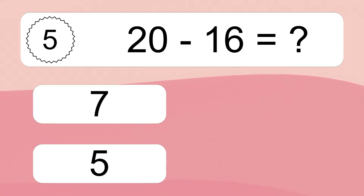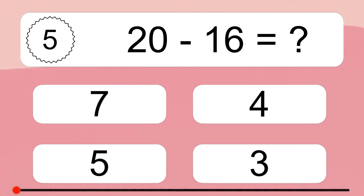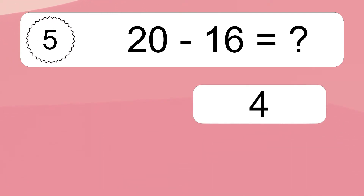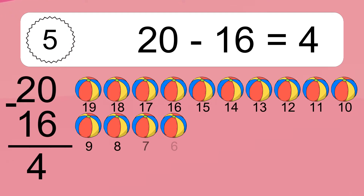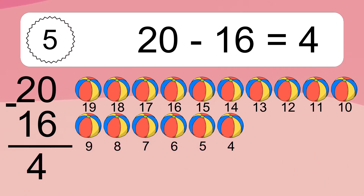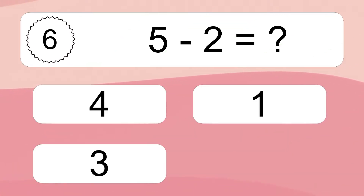20 minus 16 equals what? 20 minus 16 equals 4. Let's count it: 19, 18, 17, 16, 15, 14, 13, 12, 11, 10, 9, 8, 7, 6, 5, 4.